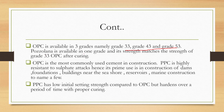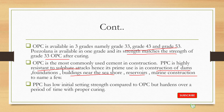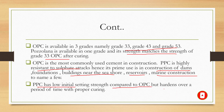OPC is the most commonly used cement in construction. PPC is highly resistant to sulfate attacks, so it is used in the construction of dams, foundations, buildings near seashores, reservoirs, and marine constructions. PPC has low initial setting strength compared to OPC, but hardens over a period of time with proper curing.